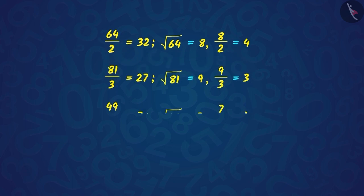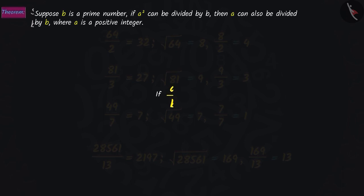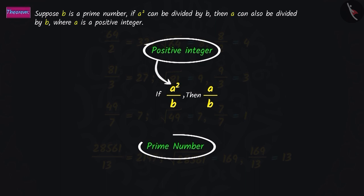If we continue to do the same with other numbers, what do you observe? Based on these examples, we can say that for a positive integer a, if a² is divisible by any prime number b, then the number a will also be divisible by b.